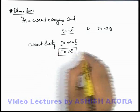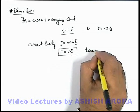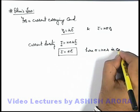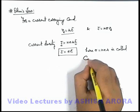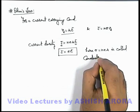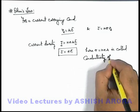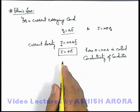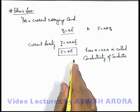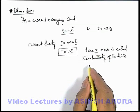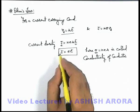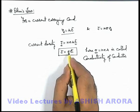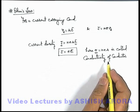Here σ, which is written as nEμ, is called the conductivity of the conductor — the characteristic property of the material, the metal in which the current is flowing. So current density is directly proportional to electric field, and the proportionality constant σ is the conductivity of the metal.